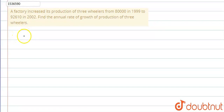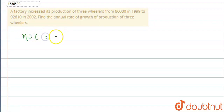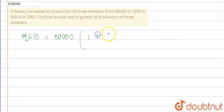Let's assume that the amount is 92,610 and the initial is 80,000. We have a formula in this: (1 + r/100) whole cube.